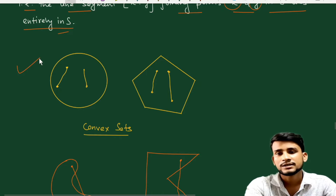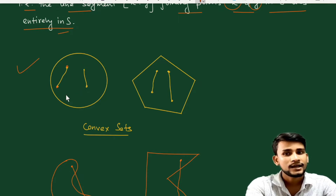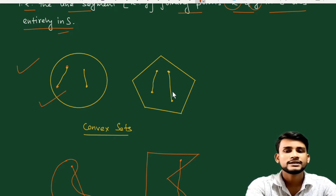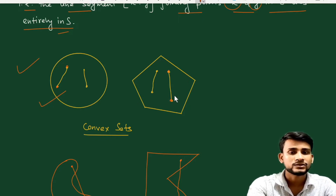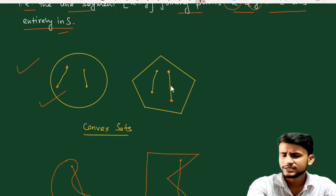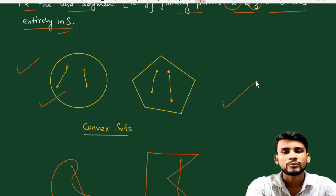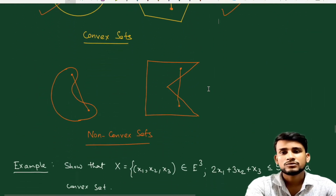For example, consider a circular disk. If we take any two points inside it and join them by a straight line, that line lies entirely within the disk. This is an example of a convex set. Similarly, if we take a pentagon, any line segment joining two points inside it lies entirely within the pentagon, so the pentagon is also a convex set.